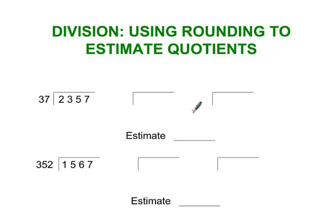Division using rounding to estimate quotients. You've got a division problem with two brackets that you need to fill in. What you're going to do is first round the divisor to one digit accuracy — one non-zero digit. So in this case we're rounding the tens place, and we're going to round that to 40.